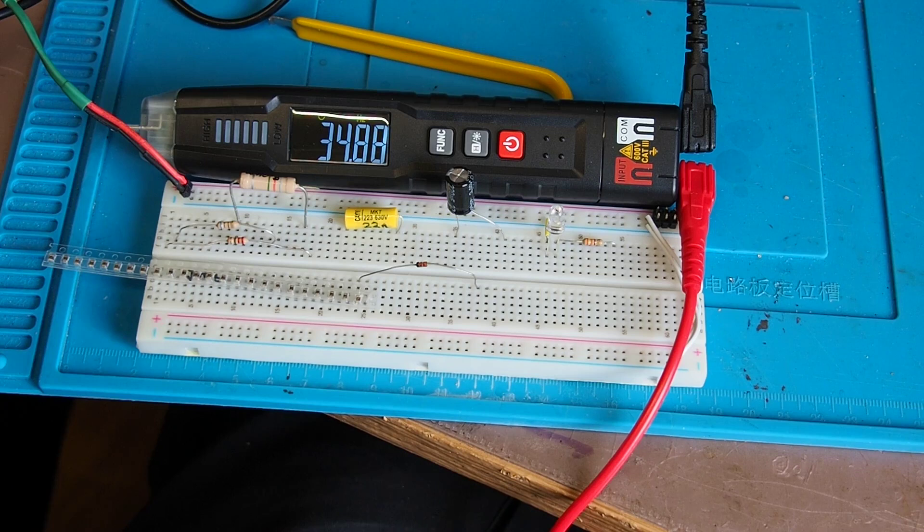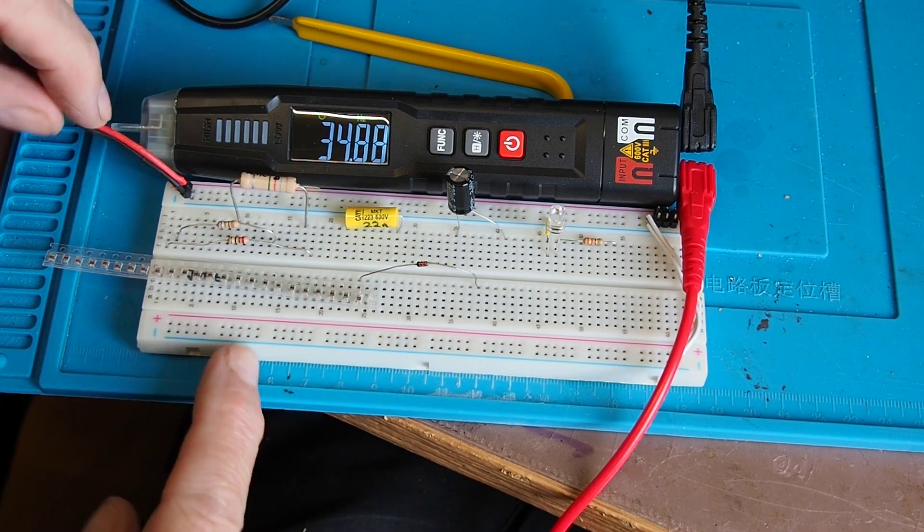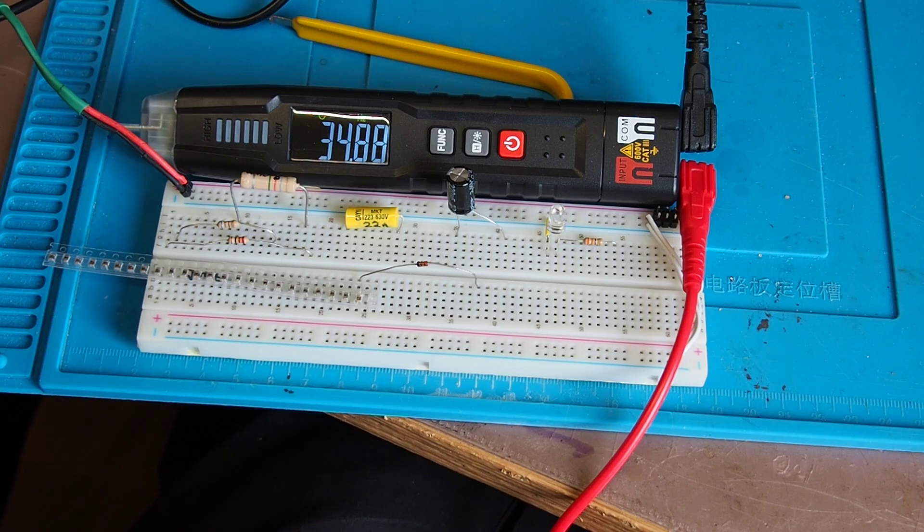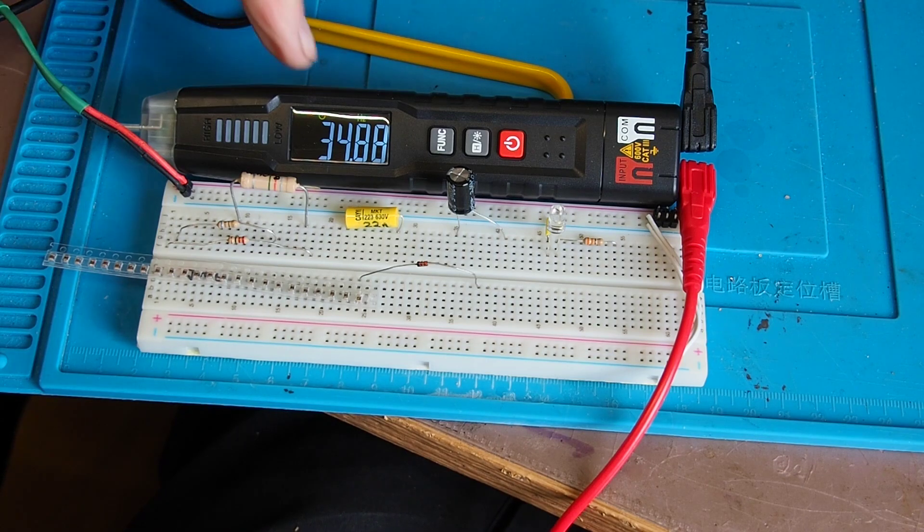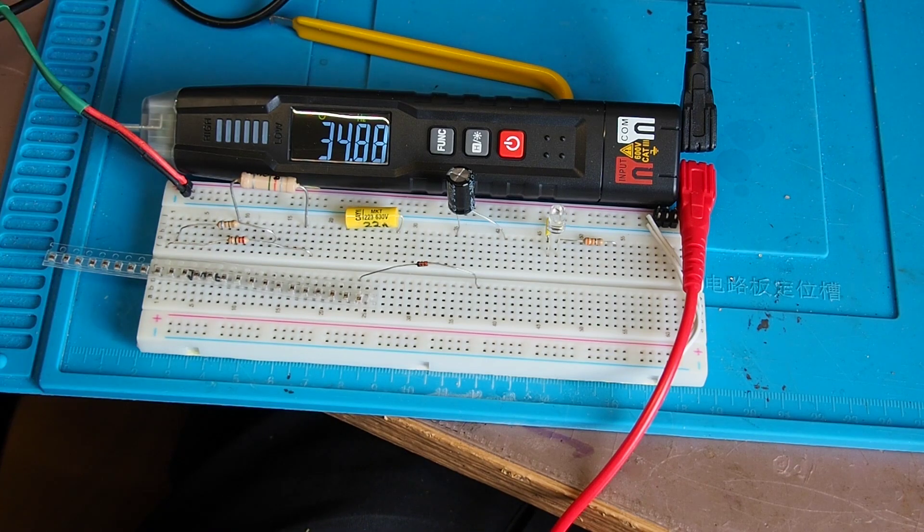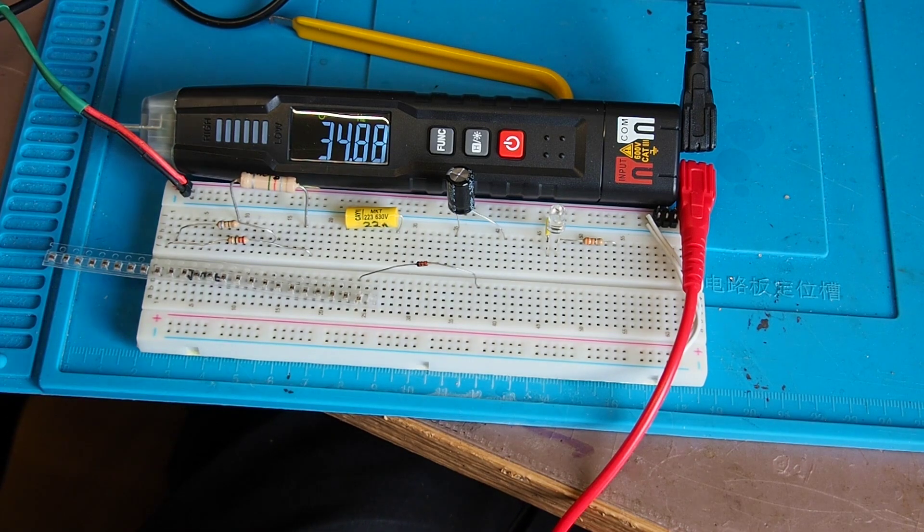On to frequency then. I've got the two probes connected to my function generator. Currently I've got it producing a 35 hertz sine wave and you can see there the meter's making that 34.88.